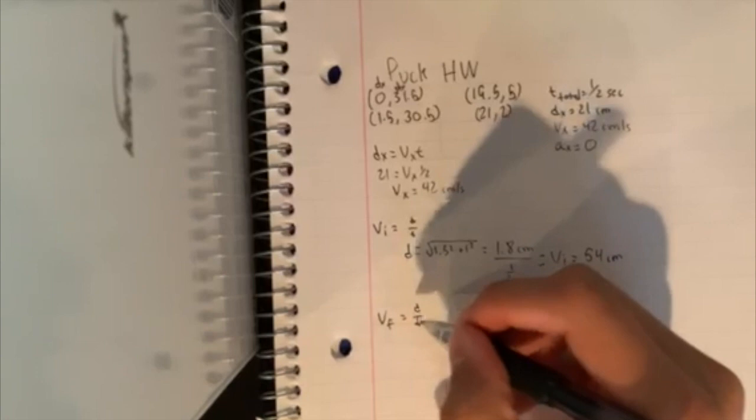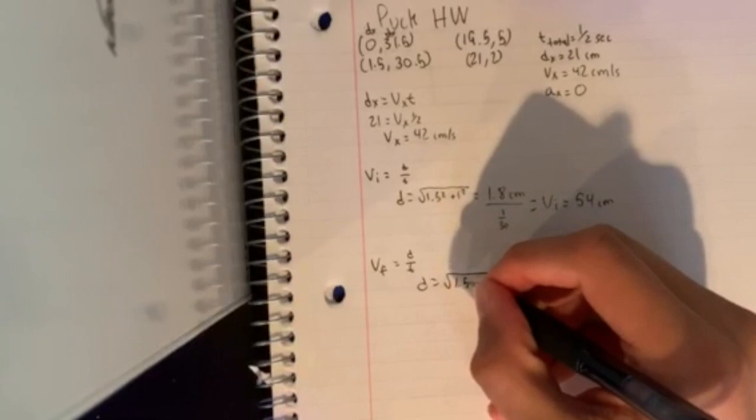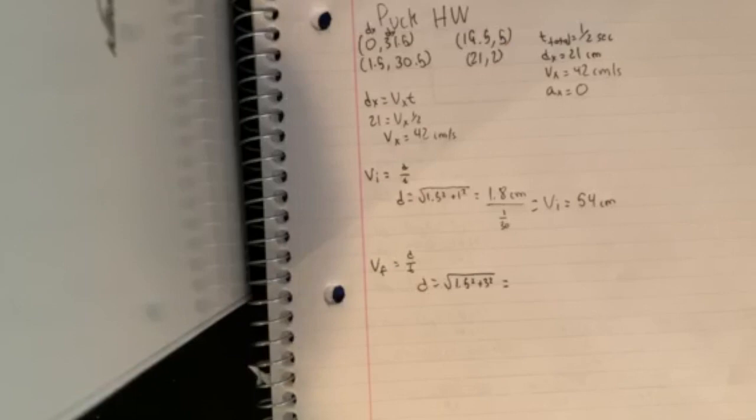Now if we go to v-final, we just do the same thing. Distance would be the square root of—so d would equal the square root of 1.5 squared plus 3 squared, which comes out to 3.35 centimeters.